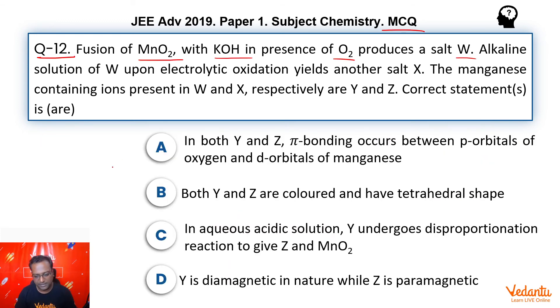So A is correct. Both are tetrahedral shape, both are colored, we have already discussed, yes. And we know that if we have MnO4 2 minus and I put it in acidic medium, it disproportionates going to MnO4 minus and MnO2. Remember this reaction we covered while studying preparation of KMnO4. Either you use electricity to oxidize manganate ion, or you use acidic medium for it to disproportionate.